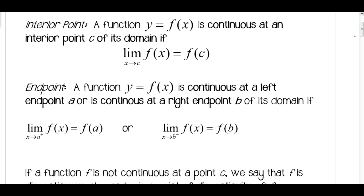And then at the endpoints, the function y equals f of x is continuous at a left endpoint a or is continuous at a right endpoint b of its domain if the limit as x approaches a from the positive side of f of x is equal to f of a, or the limit as x approaches b from the negative side of f of x is equal to f of b.